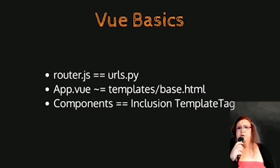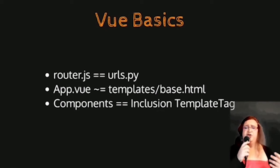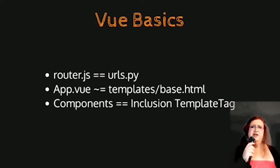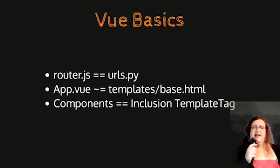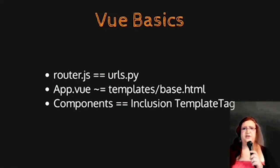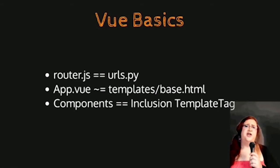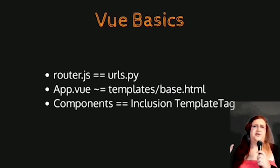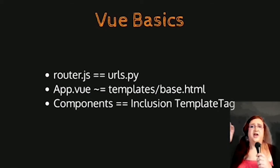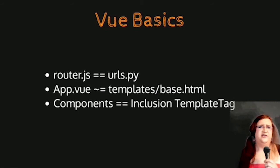Next, we have app.vue. App.vue is very similar to your base HTML template — it is the shell of your application. This is where you put your menus, headers, footers, everything that always has to be on the page. And finally, you have components. Components, if you want to compare them to something in Django, are like super inclusion tags. Every single page is usually a component, included inside your app.vue.